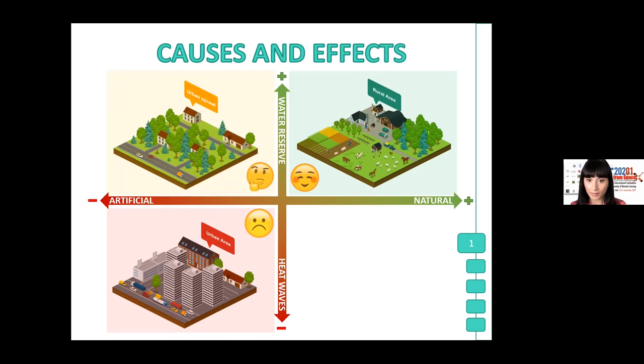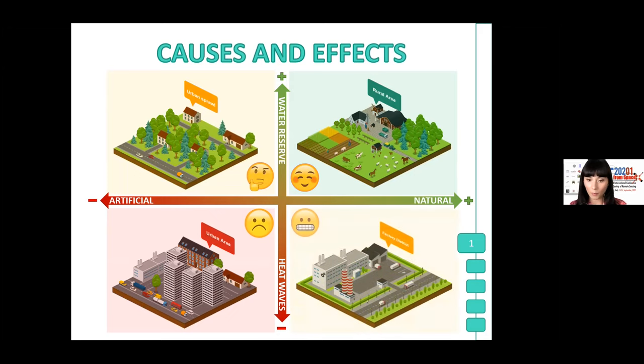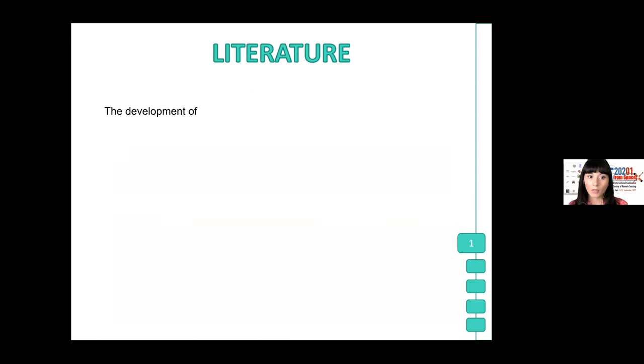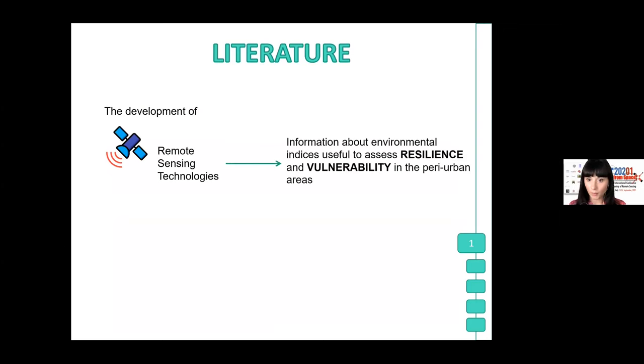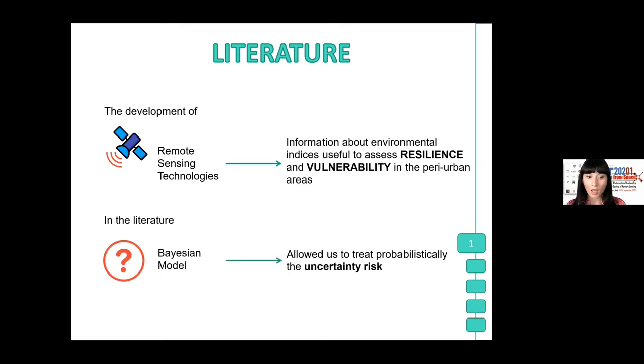The development of remote sensing technologies has made it possible to have information about environmental indices useful to assess resilience and the vulnerability in the peri-urban areas. And also, we know that in the literature, many researchers used uncertainty-based model analysis, such as Bayesian model, because they allowed us to treat probabilistically the uncertainty risk.